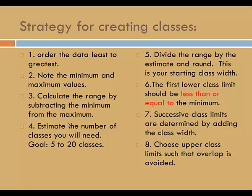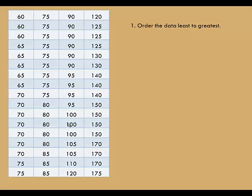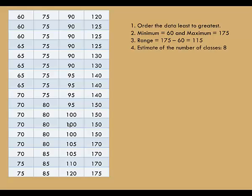Let me give you an example. Here's the data set with exam points. I've already ordered the data least to greatest. That makes it easy to see that the minimum is 60 and the maximum is 175. To get the range, I'll subtract the minimum from the maximum and I get 115. I need an estimate for the number of classes that I'll use. So I need a number between 5 and 20. The sample size here is 68, so it's not a huge data set. I'm just going to guess that I might need 8 classes.